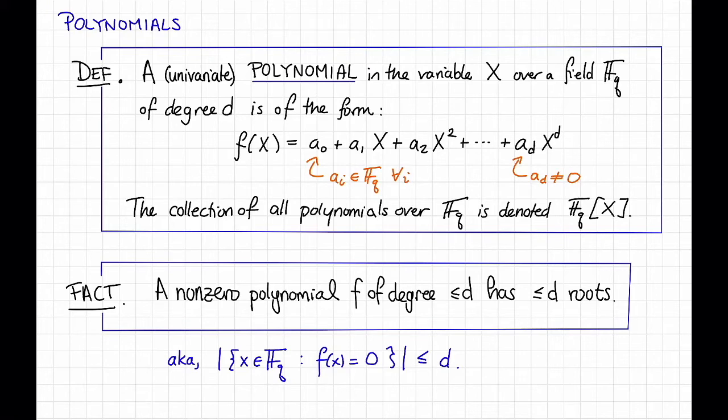A useful fact about polynomials over the reals or over finite fields is that low-degree polynomials do not have too many roots. More precisely, a non-zero polynomial f of degree at most d has at most d roots. This fact is just stupidly useful. We are going to use this again and again throughout these videos.